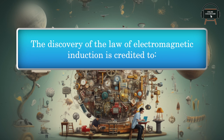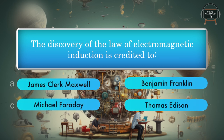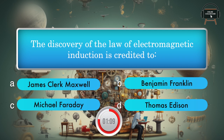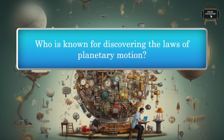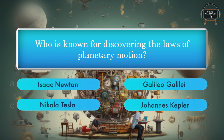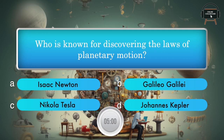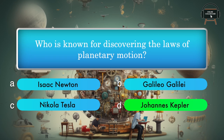The discovery of the law of electromagnetic induction is credited to: James Clerk Maxwell, Benjamin Franklin, Michael Faraday, Thomas Edison. Answer: Michael Faraday. Who is known for discovering the laws of planetary motion? Isaac Newton, Galileo Galilei, Nikola Tesla, Johannes Kepler. Answer: Johannes Kepler.